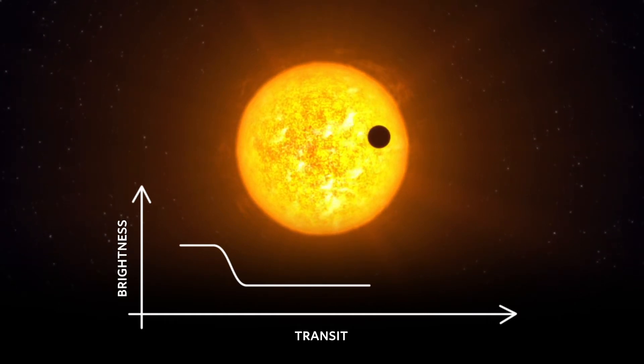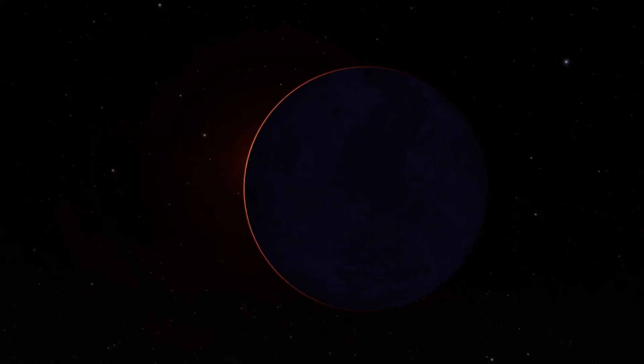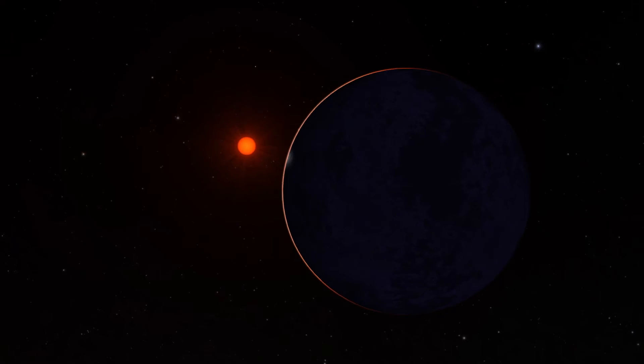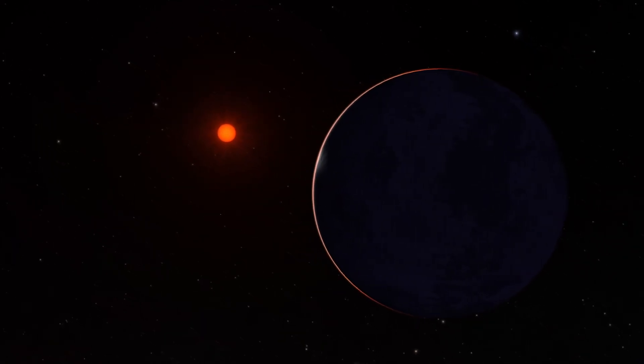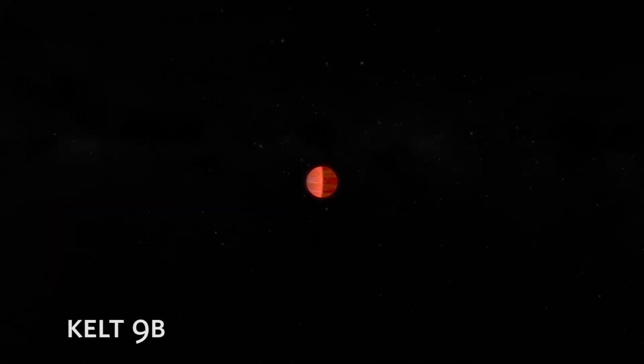If the planet aligns just right with its star, we can view the star's light passing through the planet's atmosphere. This allows us to measure its spectrum to understand what it's made of.